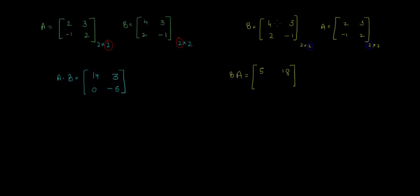We will move on to the second row. Second row will be 2, minus 1 and first column would be 2, minus 1. So 2 multiplied by 2 is 4, minus 1 multiplied by minus 1 is 1, so I'll get 5. Next, 2 multiplied by 3 is 6, minus 1 multiplied by 2 is minus 2, so I'll get 4.